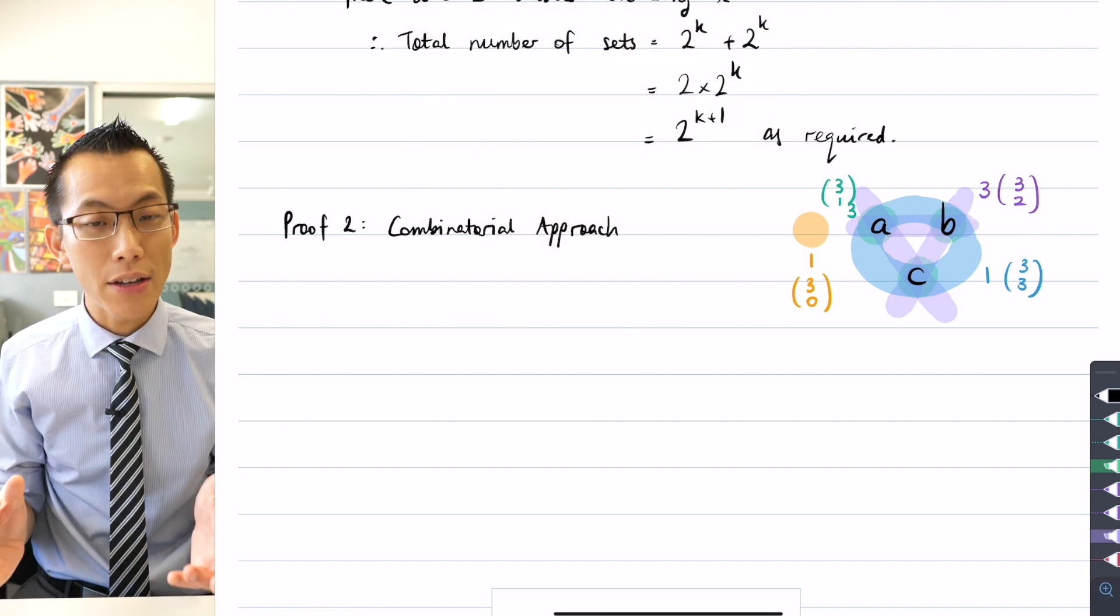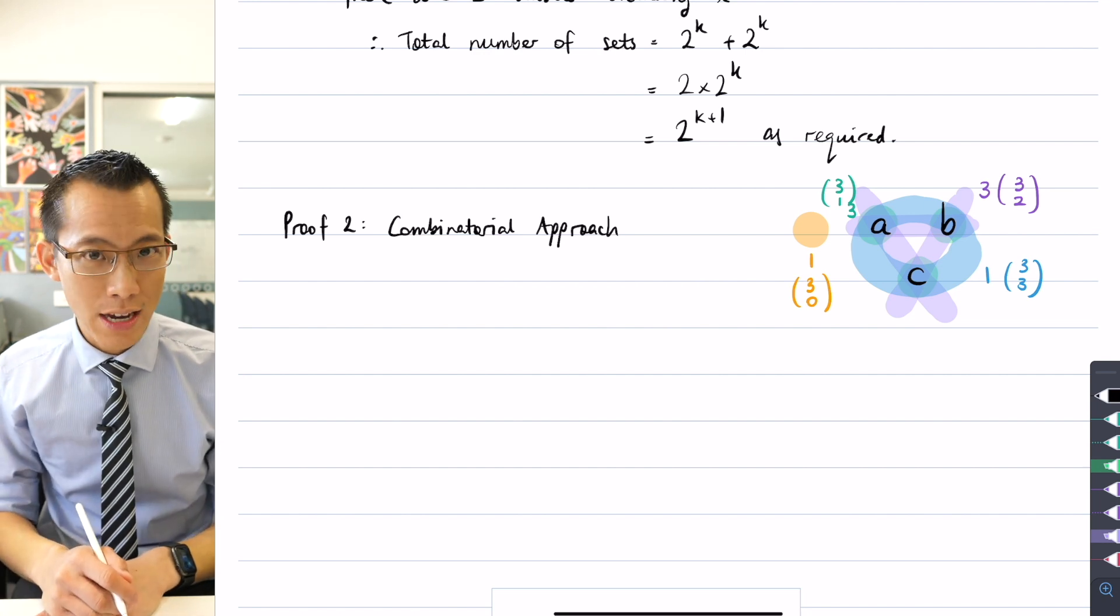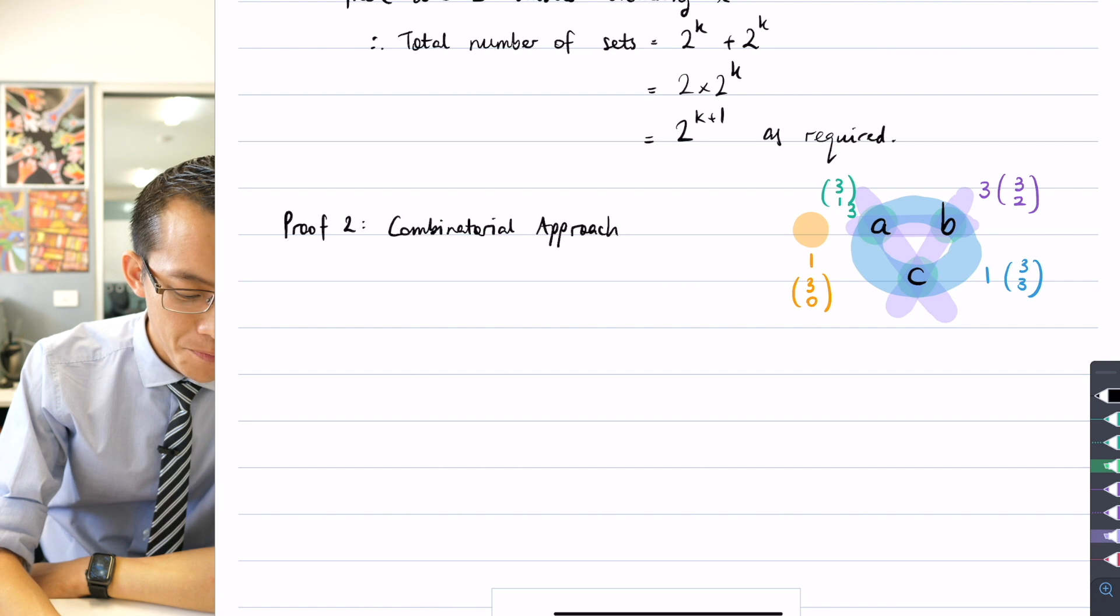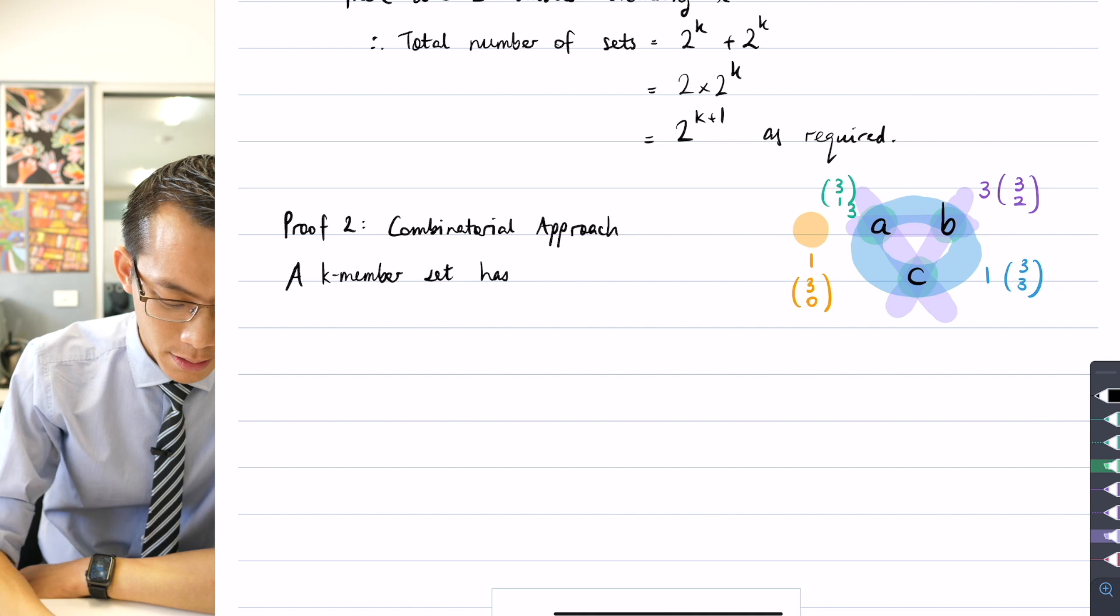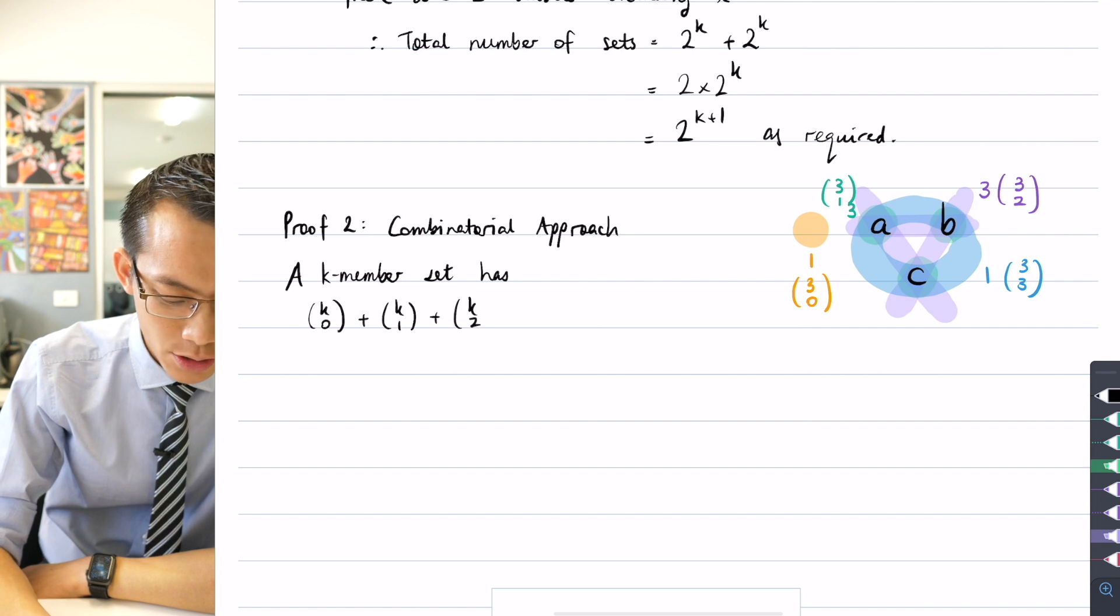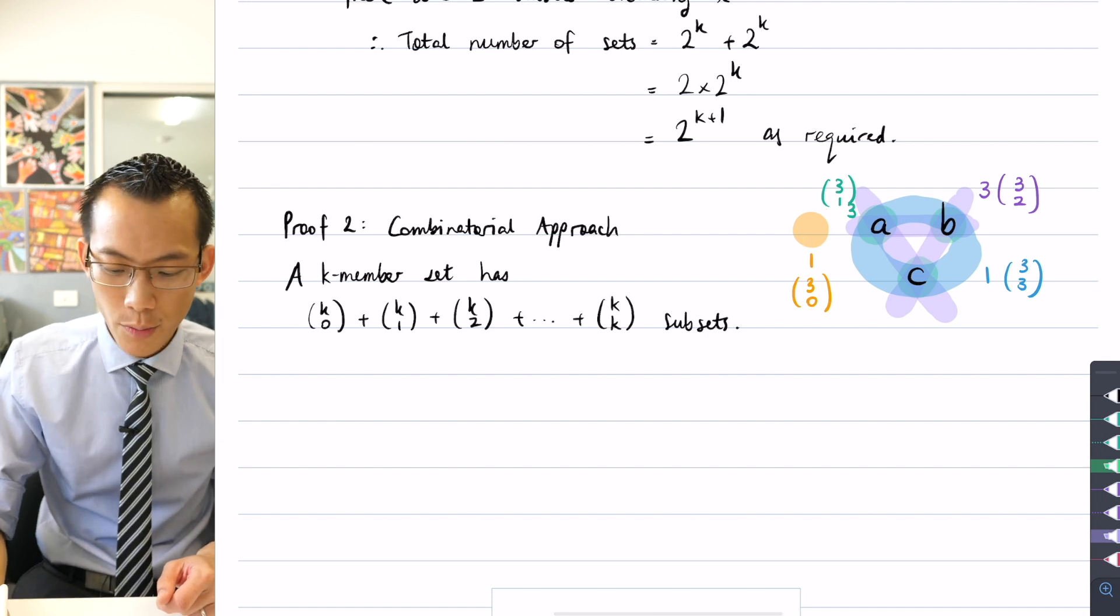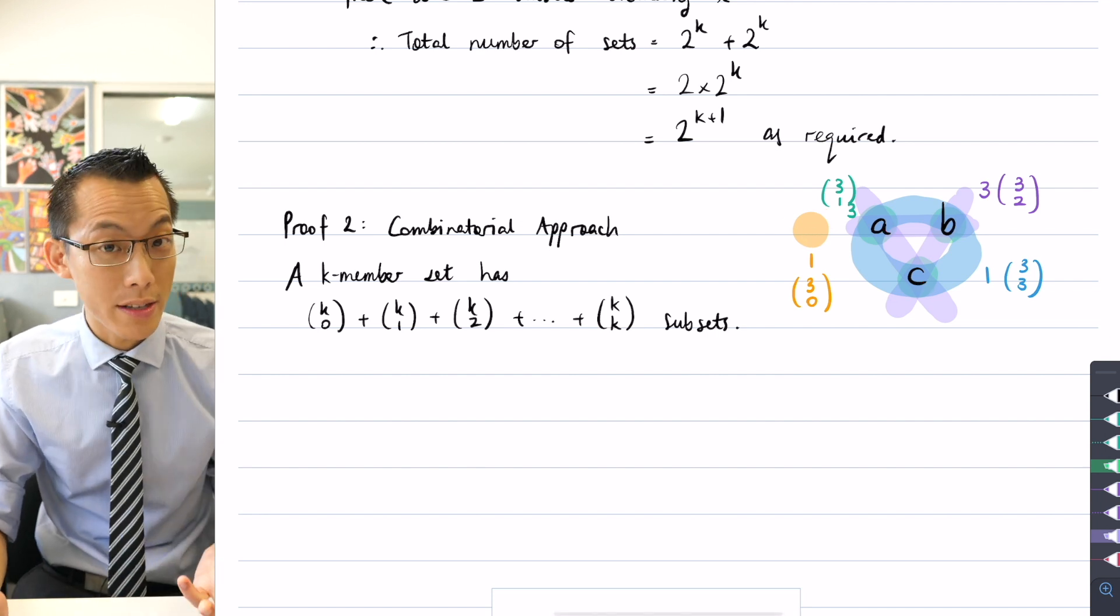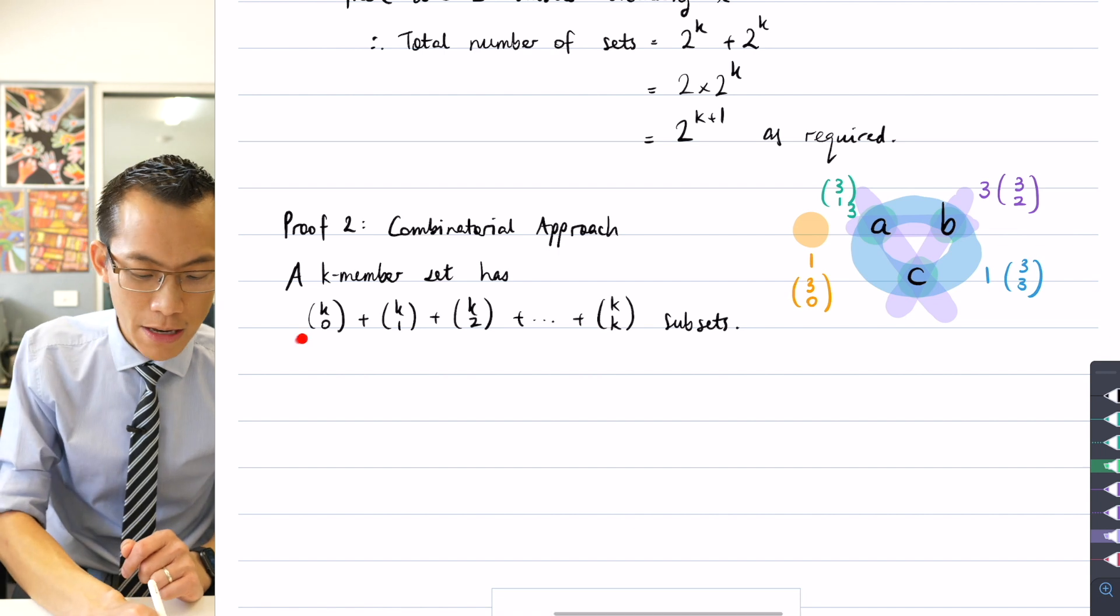Now, the reason why this is helpful is because now we have an expression for the number of subsets within a K member set directly through combinatorial notation, through our binomial coefficients. So I can say a K member set has KC0 plus KC1 plus KC2 all the way up until KCK subsets. That's the way that I formed these. I started with how many ways are there to choose zero, how many ways are there to choose one, and then how many ways are there to choose two, followed by or ended with how many ways are there to choose three. So this is just me generalizing that to if I had K.